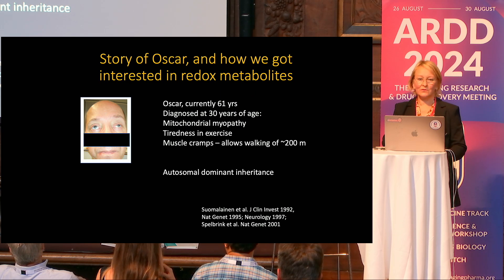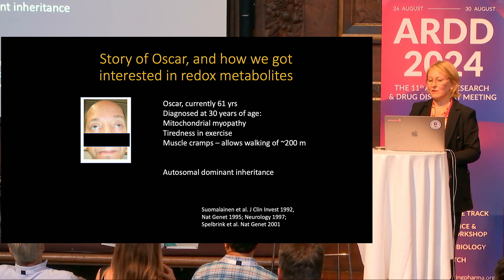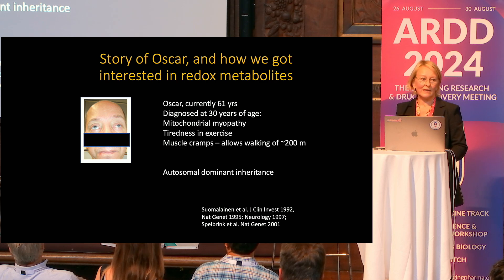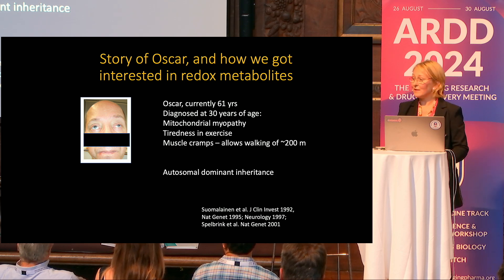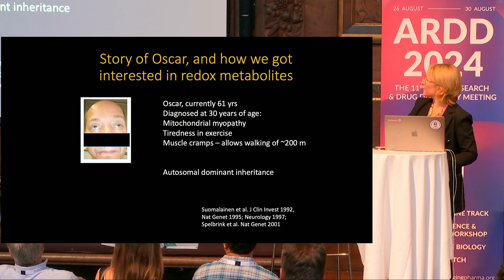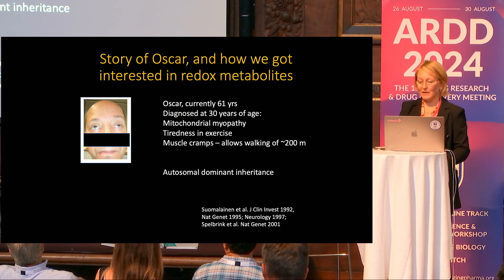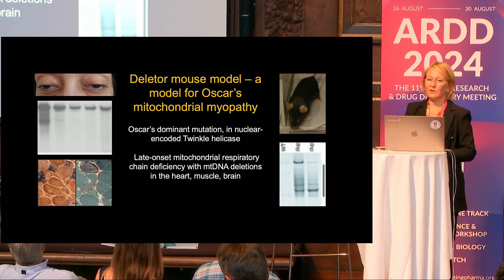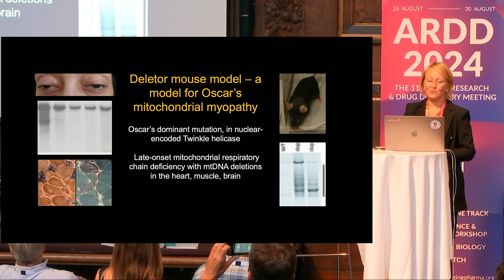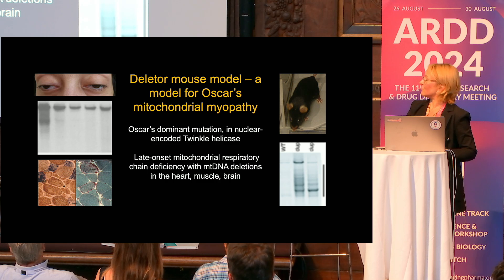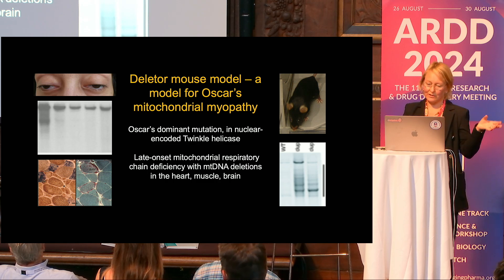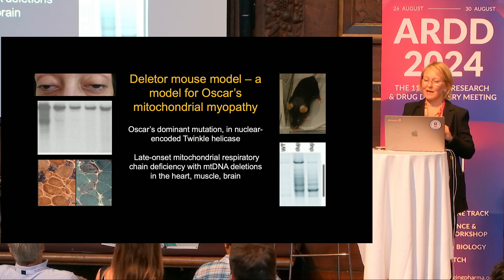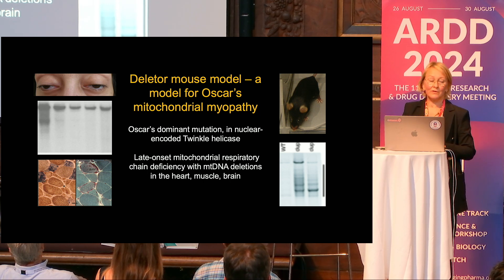I'm starting this talk from the story of Oscar. Oscar is currently 61 years old, diagnosed at age 30 with a slowly progressing mitochondrial myopathy — muscle weakness, tiredness in exercise and muscle cramps, allowing him to only walk 200 meters. This is a genetic disease. We made a mouse model carrying the same mutation as Oscar, which is in the mitochondrial nuclear-encoded twinkle helicase. It basically accumulates mitochondrial DNA deletions in a slow manner, which also happens in smaller amounts during aging.